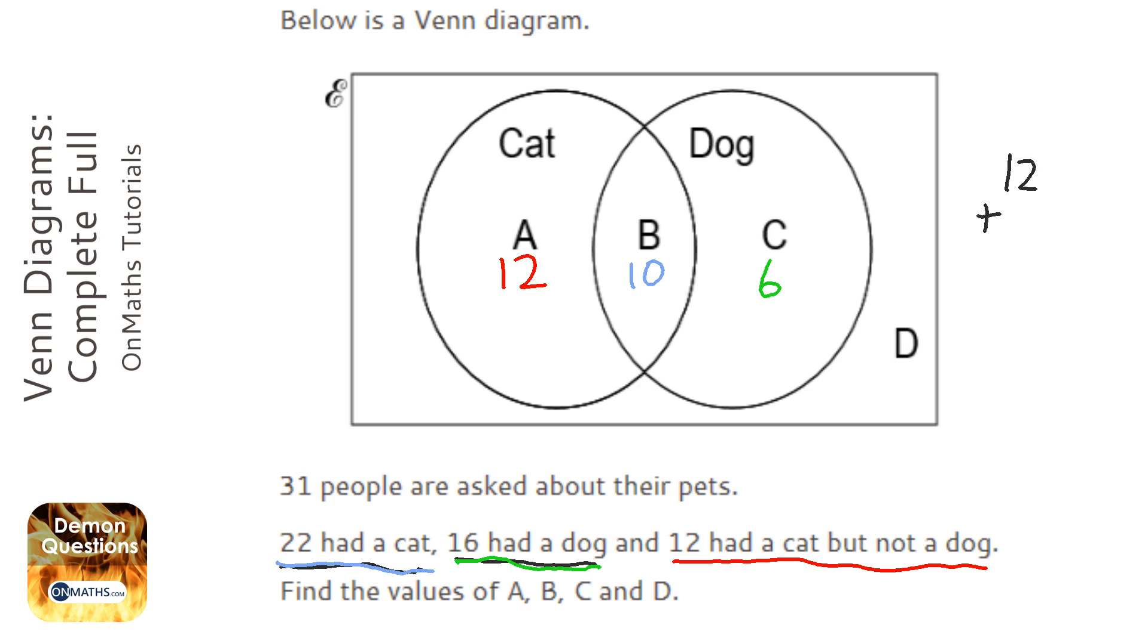Now, if we add those up all together, then that's going to give us 28. And it says that there's 31 people in total. So if we've used up 28 of the people within the two circles, the cat and the dog circles, that means we've got three people left over outside.